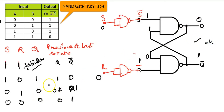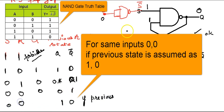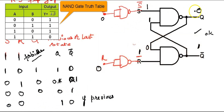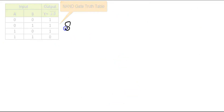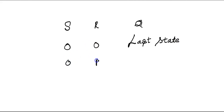Now assuming the previous state is Q = 1, Q complement = 0, and inputs S = 0, R = 0: the NAND gives 1,1 which becomes 0. Then 0 comes here, and 0,1 gives 1. So it is 1,0 — the stable state remains. For S = 0, R = 0, the last state exists whatever it is. No problem.